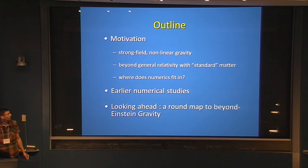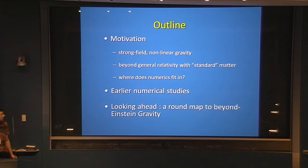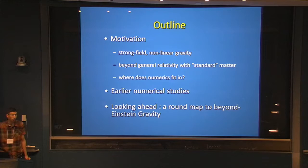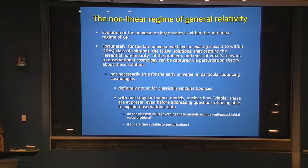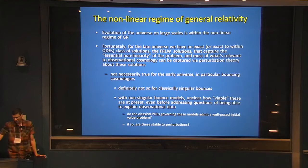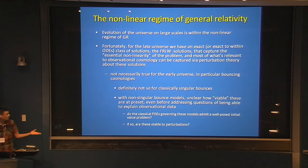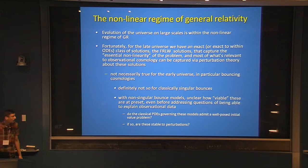Carrying on from where Anna left off yesterday — Paul and Anna introduced and motivated the program, and Anna highlighted some first steps towards understanding bouncing cosmologies in the nonlinear regime. I'll spend time thinking ahead: what are the problems and therefore the opportunities? What can we learn by applying numerical methods to these cosmologies? We're in a regime of Einstein gravity that is really well within the nonlinear regime of the theory.